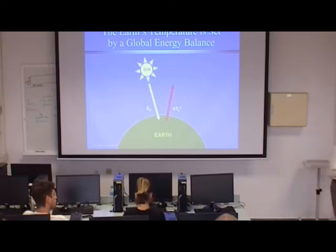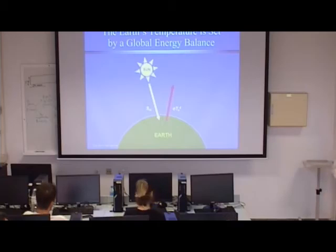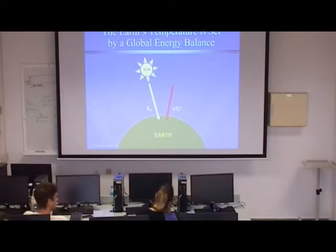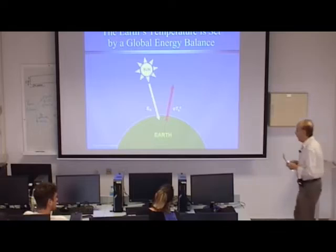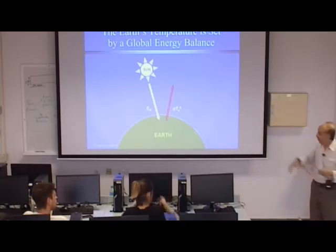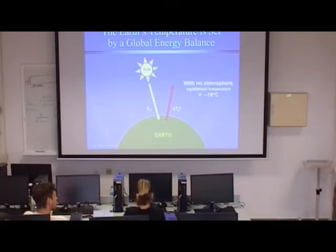Basic physics says that any time an object has a temperature above absolute zero, it begins to radiate. So as the sun starts to heat the Earth, the Earth starts to warm and it radiates back to space. When the incoming and outgoing are in equilibrium — which is what nature will always seek — that determines the temperature. It's a simple calculation: the temperature of the Earth if it were just a rock with no atmosphere turns out to be about minus 19 degrees Celsius, about 2 degrees below zero Fahrenheit.